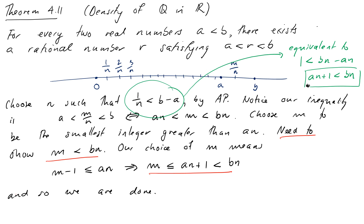We express this by saying the rational numbers are dense in the real numbers: no matter what two real numbers we choose, we can always find a rational number between them. This seems a bit strange — the real numbers are in some sense a bigger set than the rationals, yet there are still rational numbers between every pair of real numbers. There's a little more going on here than immediately meets the eye, but the rational numbers are indeed dense within the real numbers.